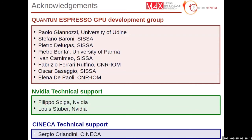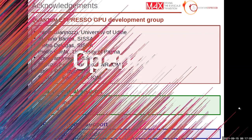Let me finish by acknowledging all the people working on this project, because the work I presented is a community effort. First, the Quantum ESPRESSO Development Group supervised by Paolo Giannotti and Stefano Baroni. I explicitly thank Pietro Delugas and Fabrizio Ferrari, who are actively working on the OpenACC parts of the code. Also Sergio Orlandini and Luis Tuber, who were our mentors during the hackathon, with Sergio also contributing to GPU development. And thank NVIDIA for their precious and valuable technical support.